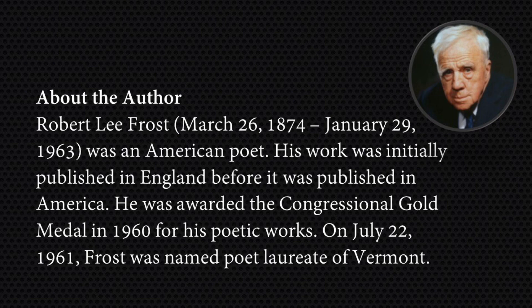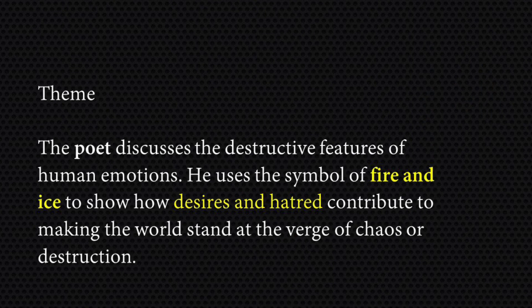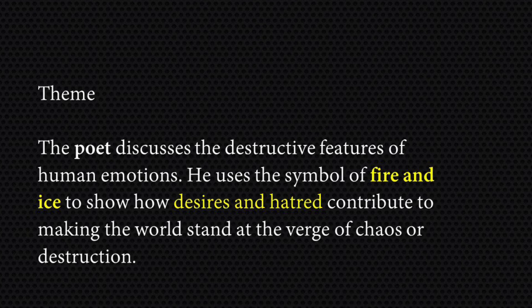Let's look at the theme of the poem. The poet discusses the destructive features of human emotions. There are various kinds of human emotions like love, hate, desire, sorrow, pain, etc. All these features have destructive aspects as well, so he uses the symbols of fire and ice. He uses these two elements to show how desire and hatred contribute to making the world stand at the verge of chaos or destruction. In simple words, he is saying that these two emotions — desire and hatred — can bring about the end of the world.